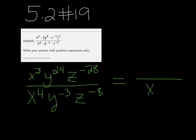24 minus a negative, remember when you subtract a negative, you add, so that's 24 plus 3, so that's y to the positive 27. That's going to stay in the numerator because it's positive.